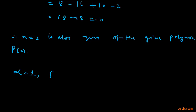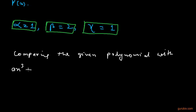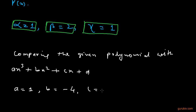Let us denote the three zeros as alpha equals 1, beta equals 2, and gamma equals 1. Now we shall compare the given polynomial with the standard form of a cubic polynomial, which is ax³ plus bx² plus cx plus d. Comparing, we get a equals 1, b equals minus 4, c equals positive 5, and d equals minus 2. These a, b, c, d are the coefficients of the given polynomial.